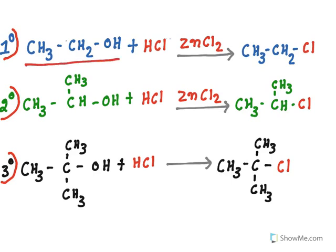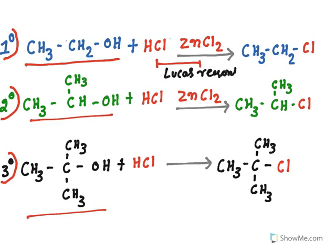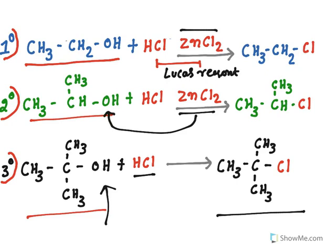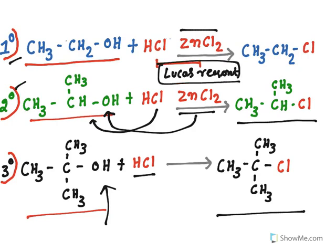For alkyl chloride formation, hydrochloric acid along with zinc chloride is used — this reagent is known as Lucas reagent. For tertiary alcohol, HCl alone is sufficient. For primary and secondary alcohols, Lucas reagent (HCl + ZnCl₂) is needed. Zinc chloride attaches to the OH group and facilitates its departure, so chloride can substitute. For tertiary, the reaction is very rapid without ZnCl₂.